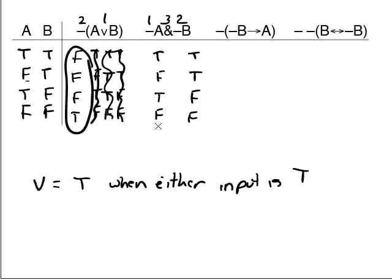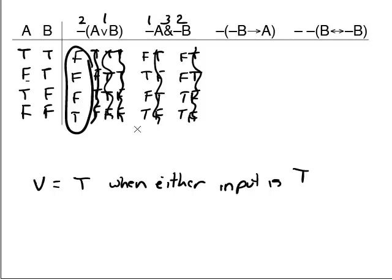Working on the first dash: take the A column and get the opposite values — false, true, false, true — then cross out A. For dash-B, we get false, false, true, true, and cross out B. You might wonder why bother writing the A column at all instead of immediately writing the opposite underneath the dash — that's a very reasonable shortcut to take if you want to.